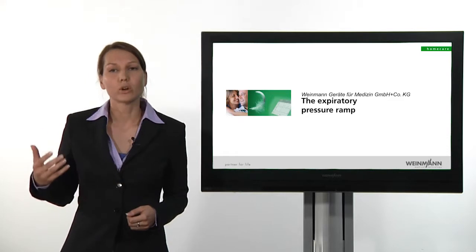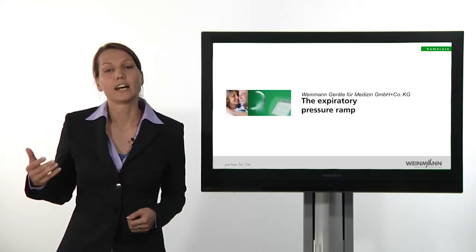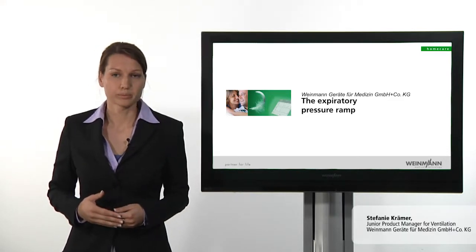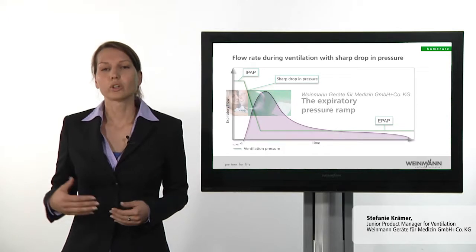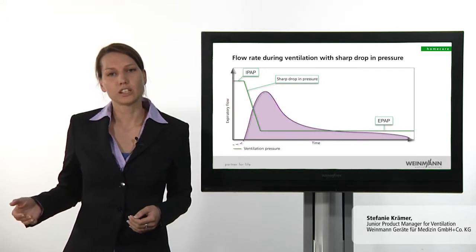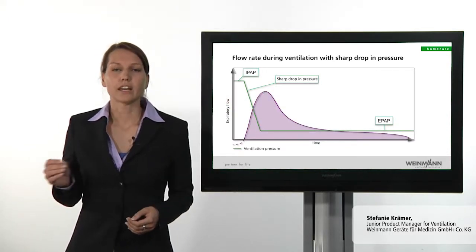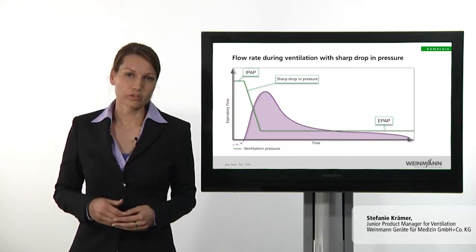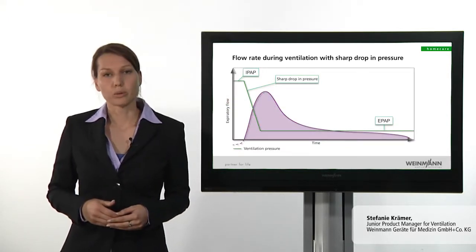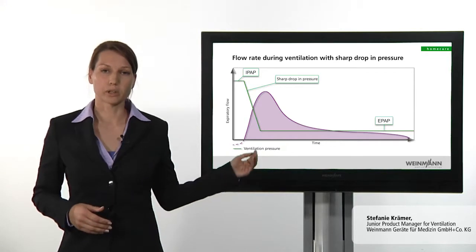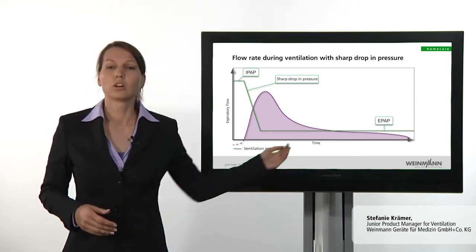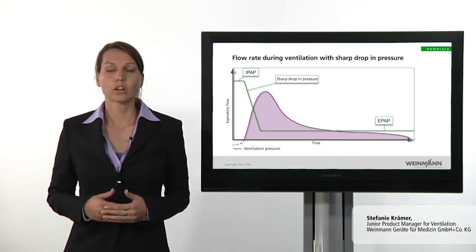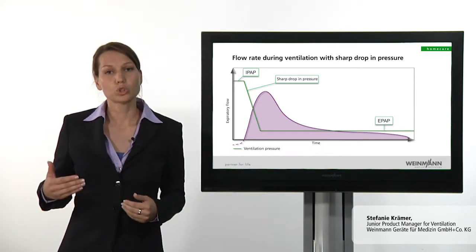In these patients, the airways tend to collapse during exhalation. This type of collapse can be caused when the expiratory phase continues unchecked and there is too sharp a transition between a high inspiratory ventilation pressure and the expiratory ventilation pressure.